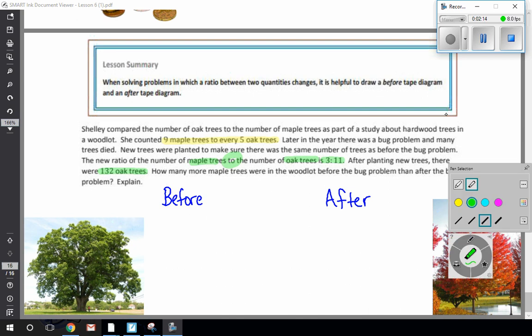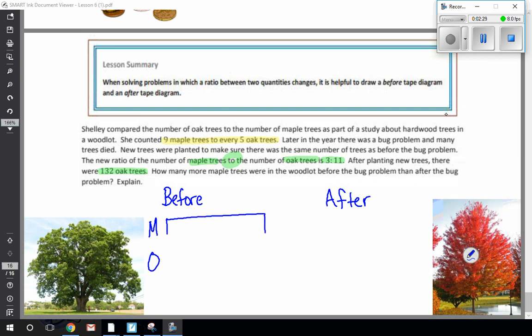So I'm going to set up my two separate tape diagrams. I will start with before the bug problem. We had nine maple trees to five oak trees. So I like to do M for maple and O for oak. And it said nine to five. So I'm going to draw my tape diagram and make nine equal parts here. And then for the oak was five. So I'm going to follow along, one, two, three, four, five, about that long and try to make those visually about the same. So I've got nine to five, maples to oaks.